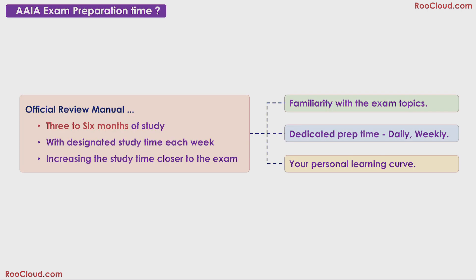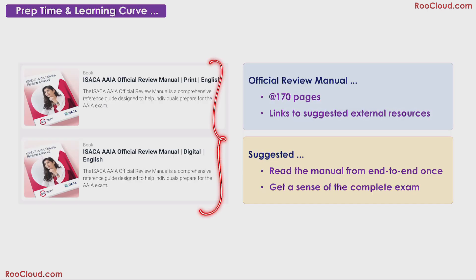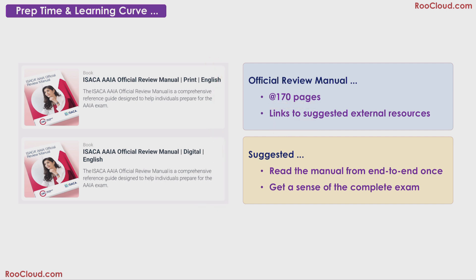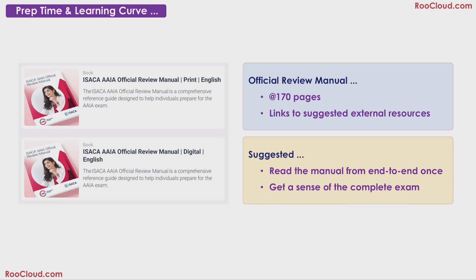Next, let us look at the other two factors: dedicated prep time and your learning curve. The official manual is around 170 pages, containing around 150 pages of actual content with plenty of links to suggested external resources. As a first step, I would recommend that you read the manual end-to-end. Don't memorize anything, just read it like a novel to get a sense of what the exam is all about. Some topics may be light, some may be heavy, and some will have lots of technical jargon that need to be looked up on Google or ChatGPT.